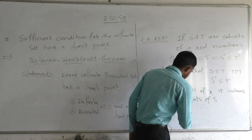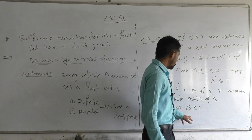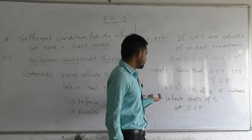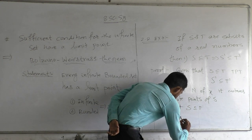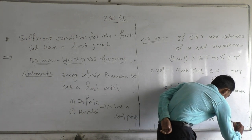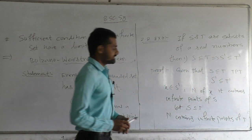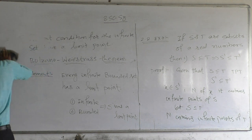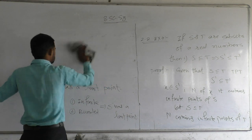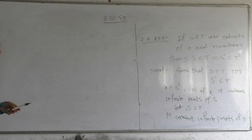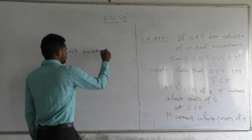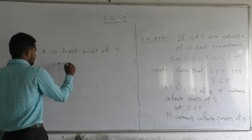Since S ⊆ T, every point of S belongs to T. Therefore every neighborhood N of x contains infinitely many points of T as well. This implies that x is a limit point of T, that is, x belongs to T dash.